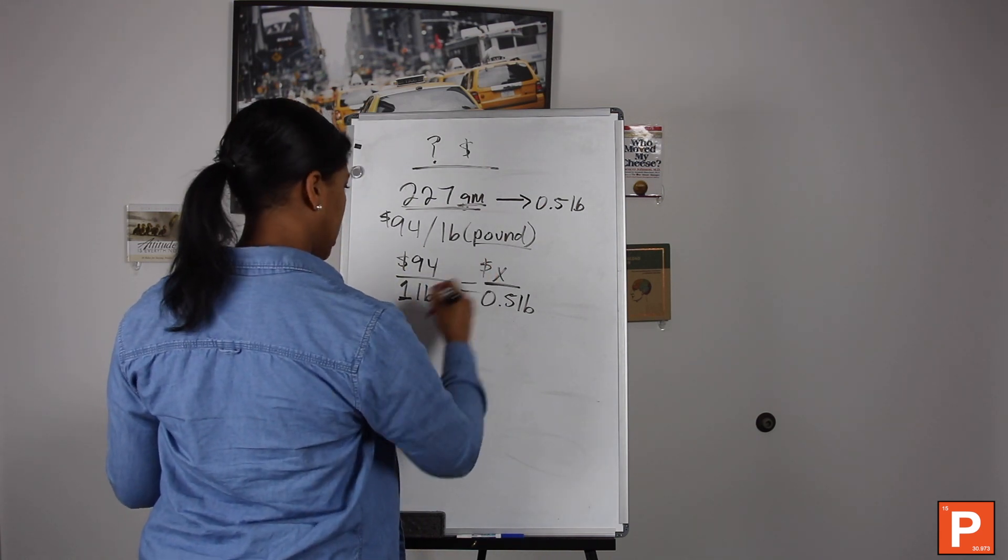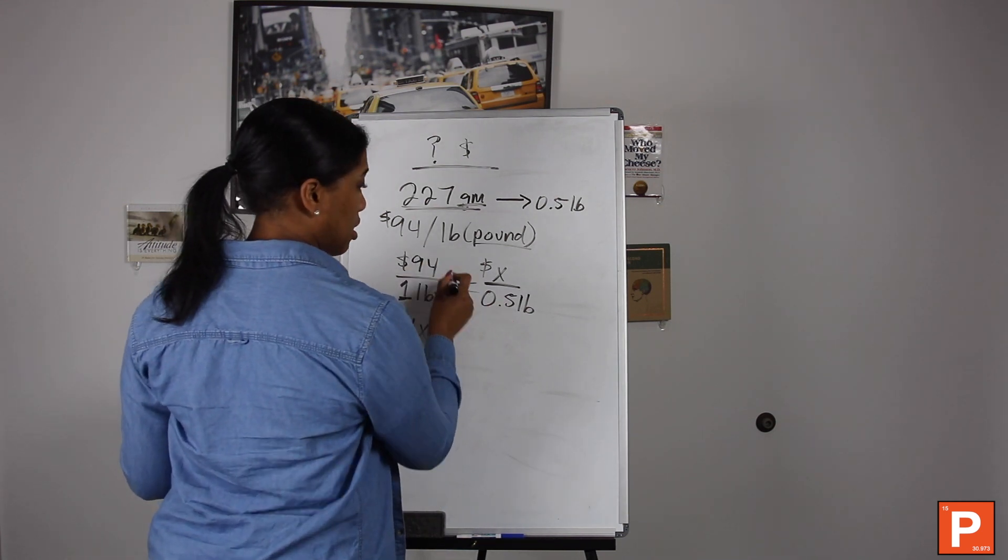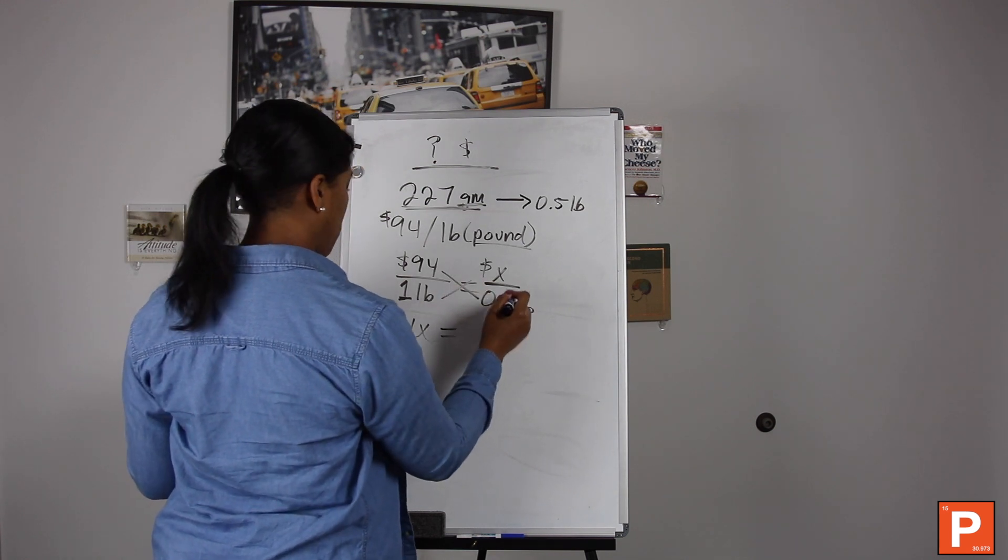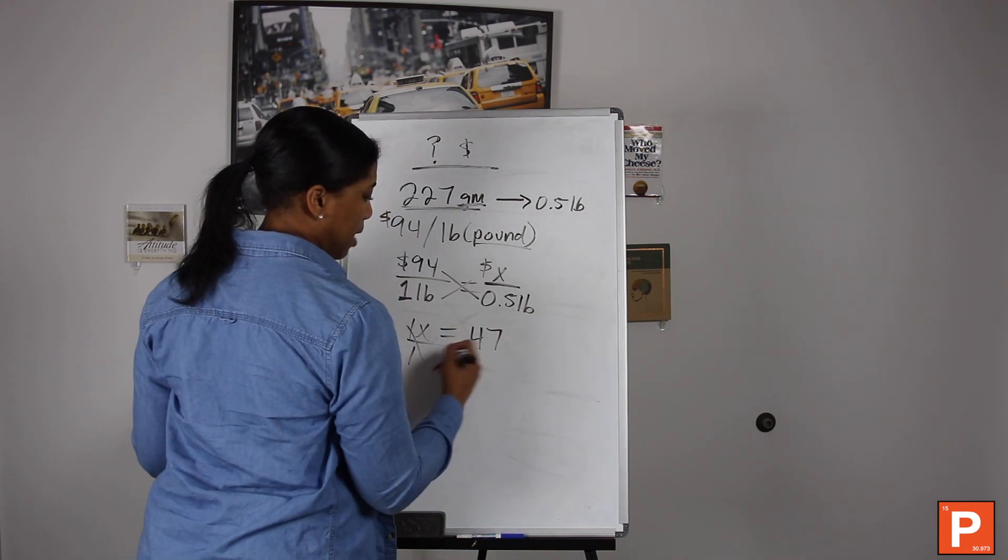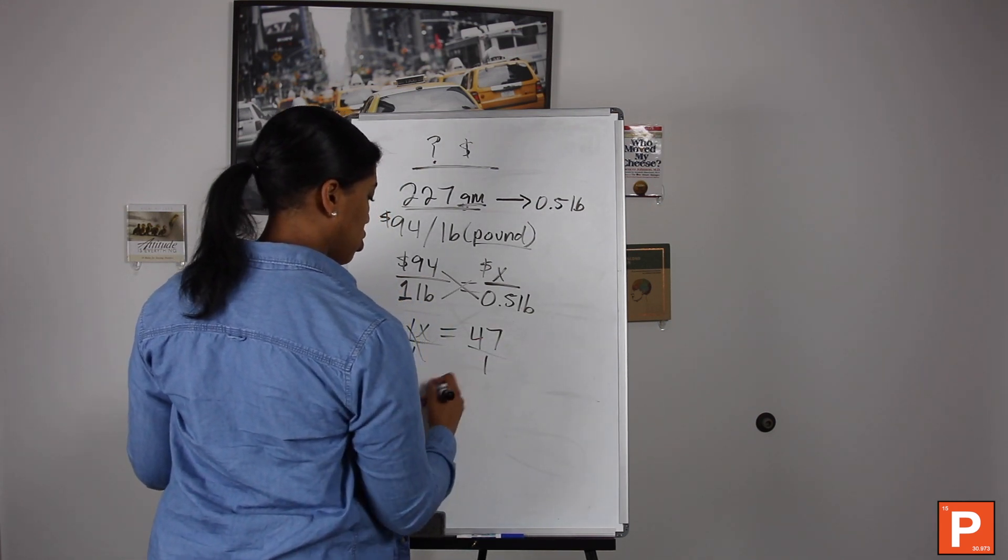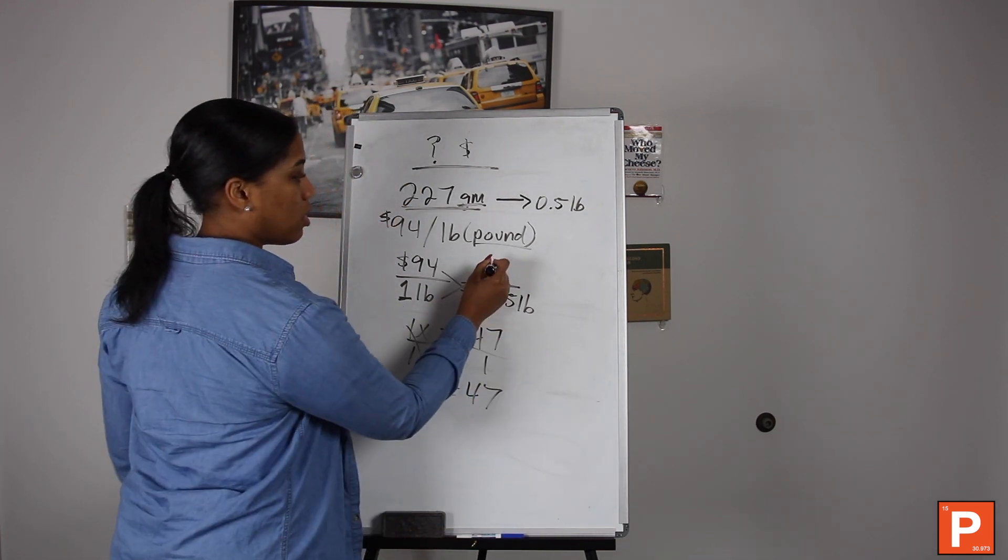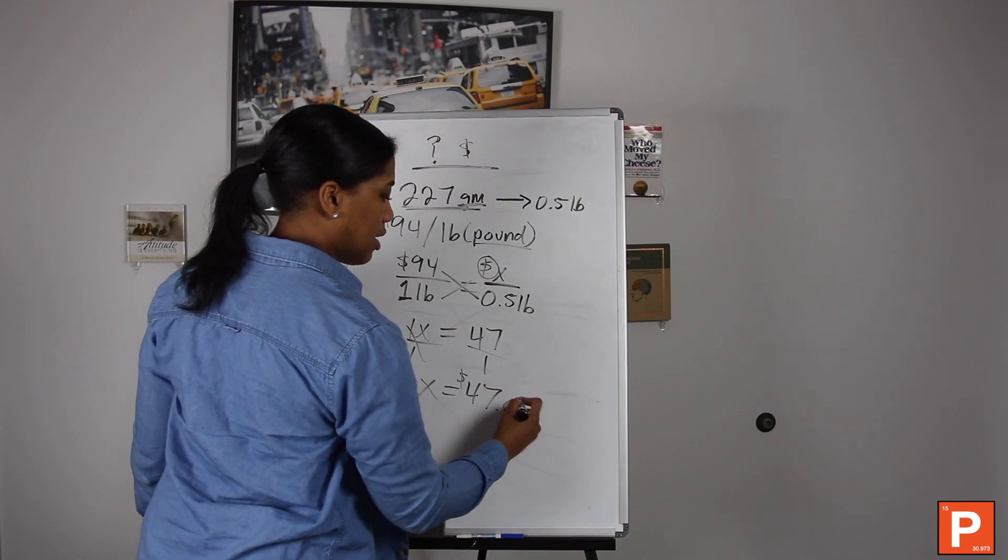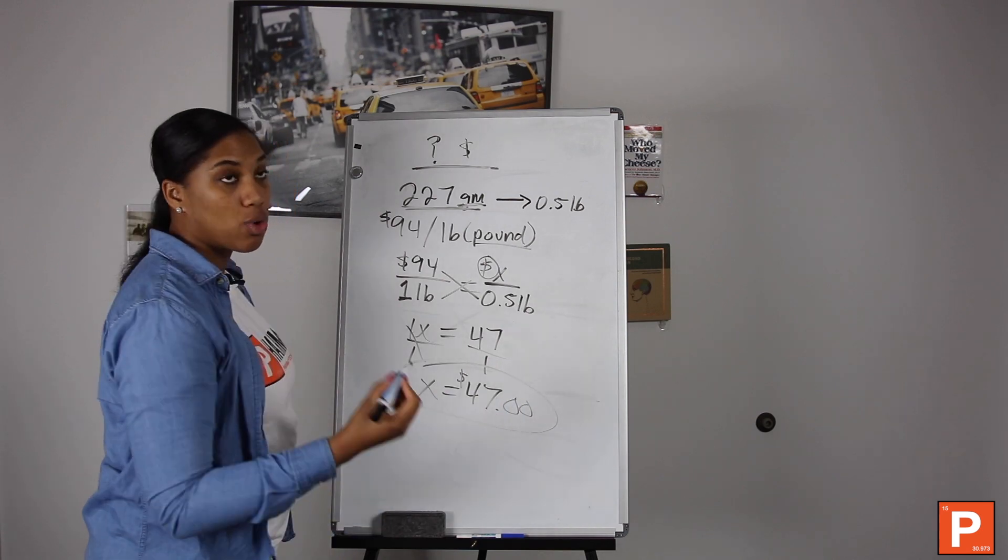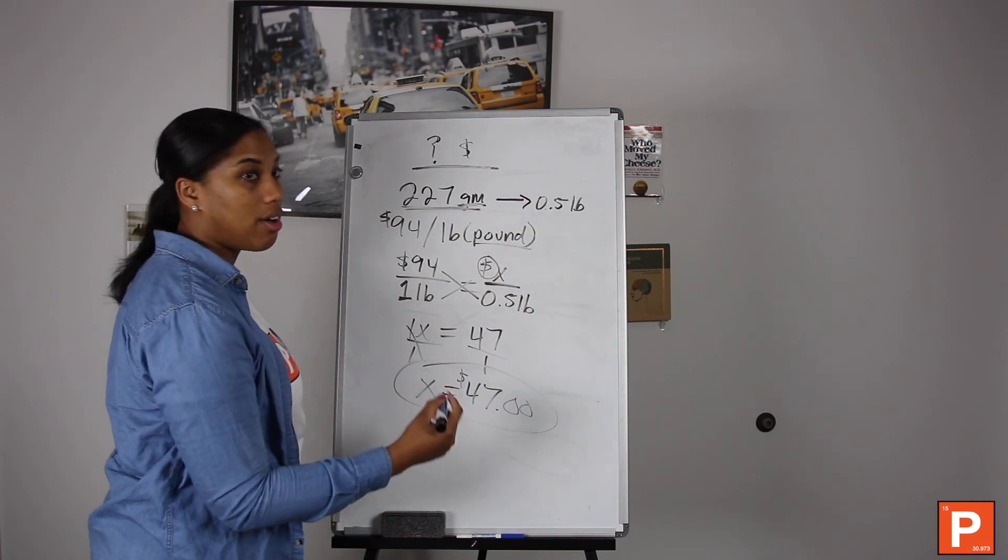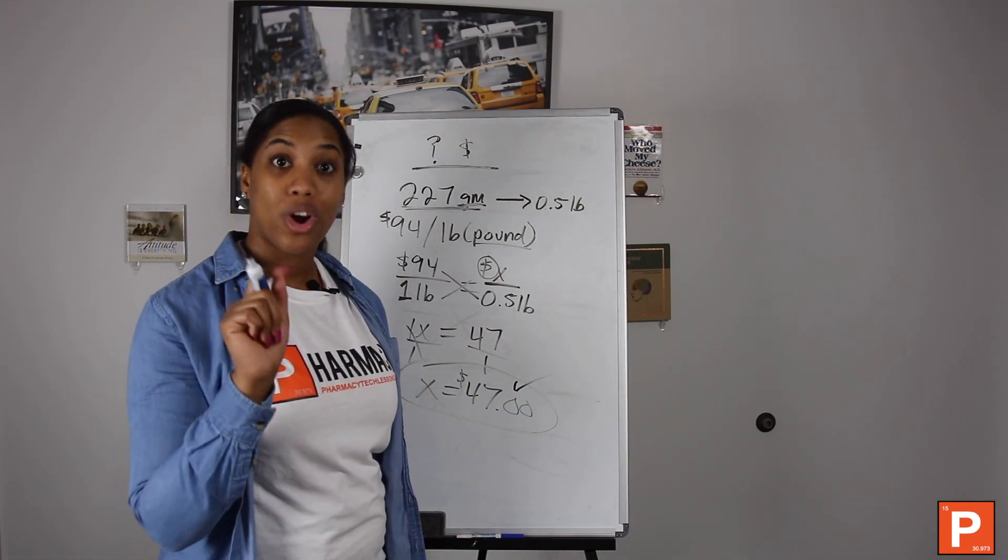So once you cross multiply and do the math, you should get 1 times x equals 94 times 0.5, which you should get 47. And anything divided by one is that number, so it's going to be x equals 47. Now what's the units? Dollar. So $47 is how much we would pay for 227 grams, aka half a pound, of this particular medication in the pharmacy. And 47 is your answer.